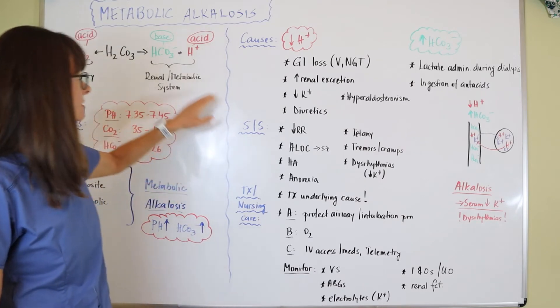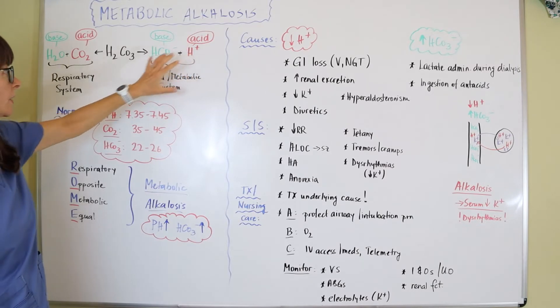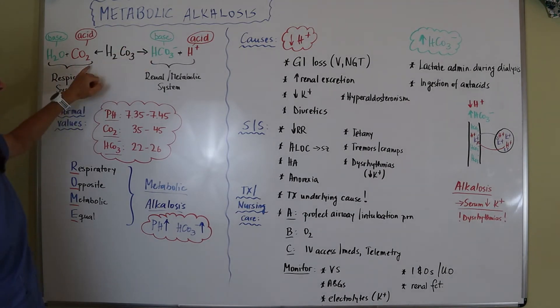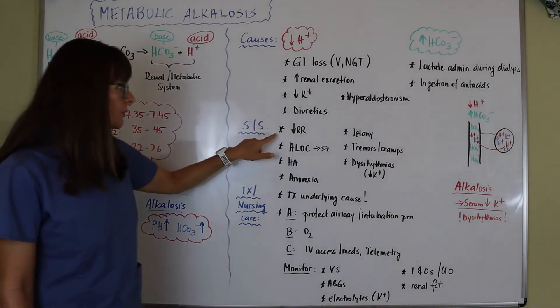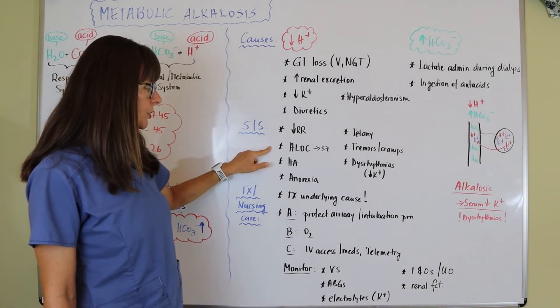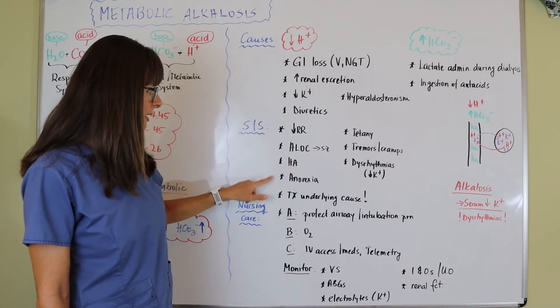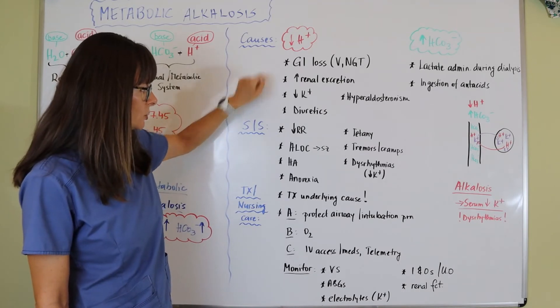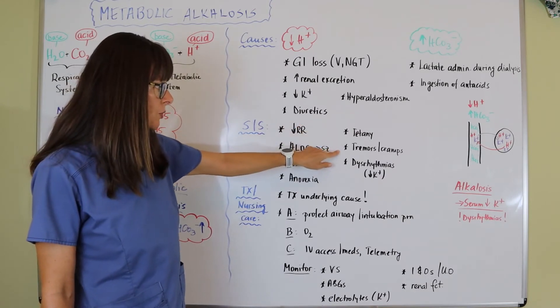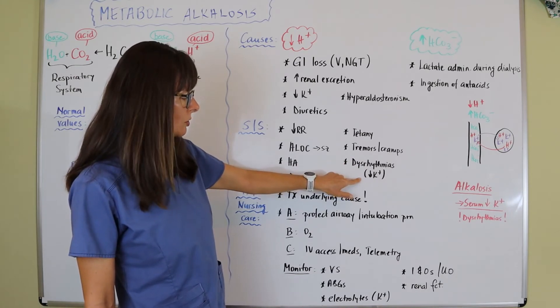Signs and symptoms: because the body is trying to regulate this imbalance on the metabolic side, we're trying to keep more acid in the system. Therefore the respiratory rate will go down, so the patient will be hypoventilating. They might be altered, which can lead to seizures. They might complain of headache, be anorexic. There might be tetany, involuntary muscle contractions, tremors, and muscle cramps.